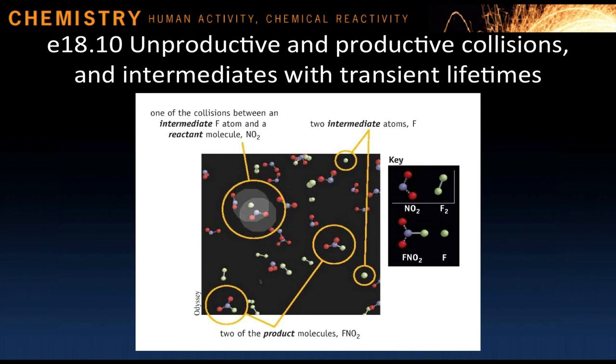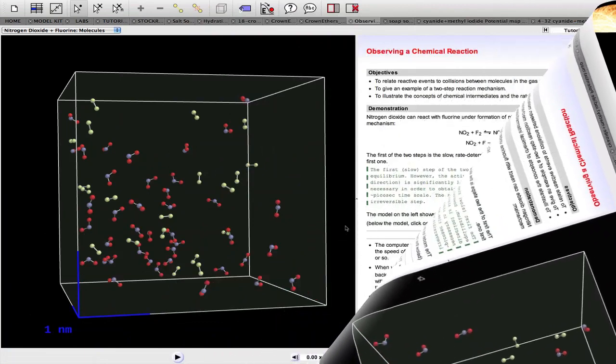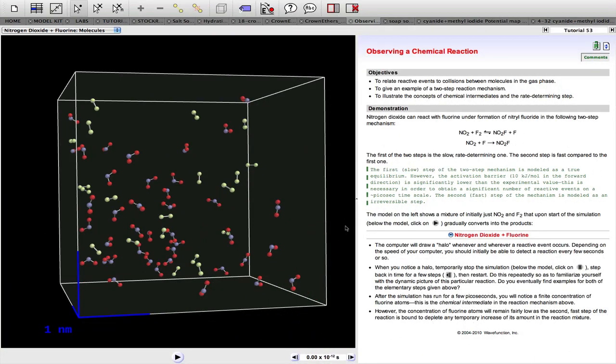In eResource 18.10, the simulation depicting the reaction between NO2 and F2 molecules shows unproductive and productive collisions and intermediates with transient lifetimes. Let's have a look. Odyssey tutorial 53 simulates this two-step reaction where fluorine atoms are formed as intermediates in the first reversible rate-determining step.